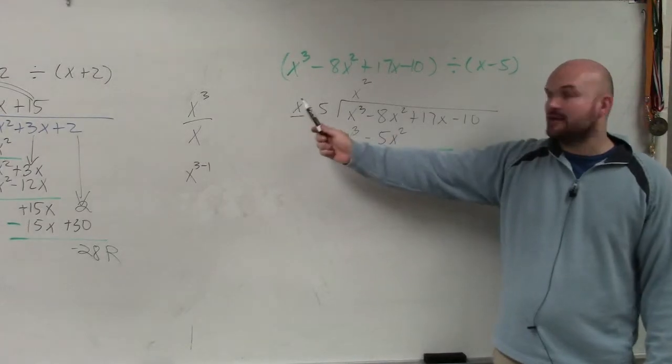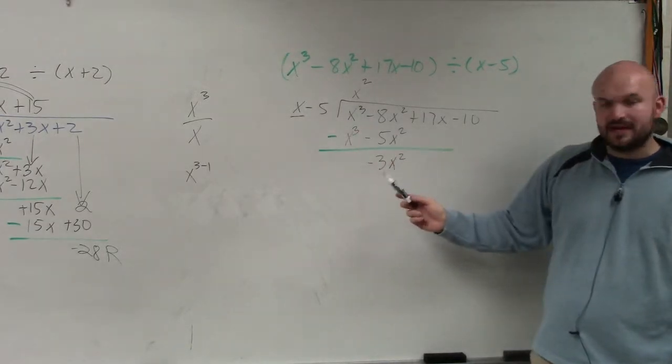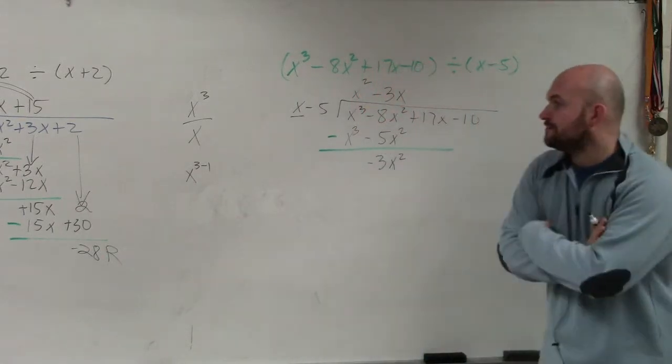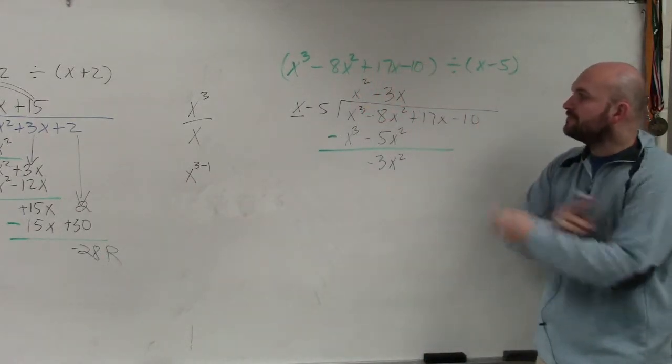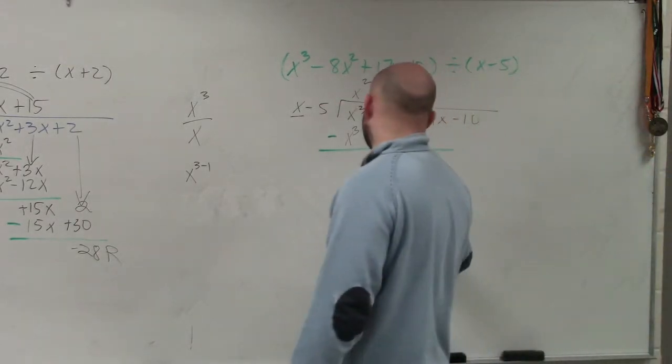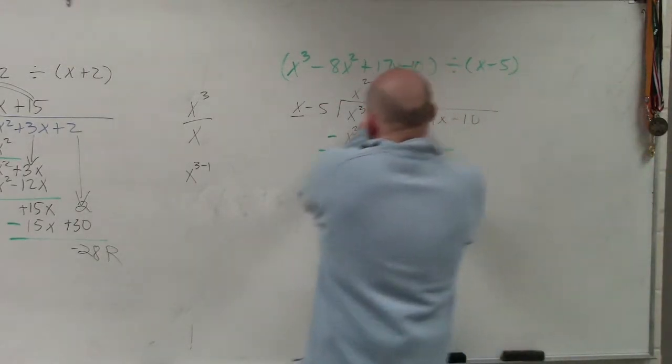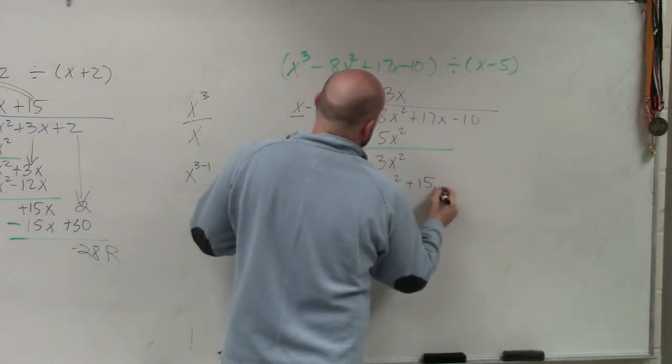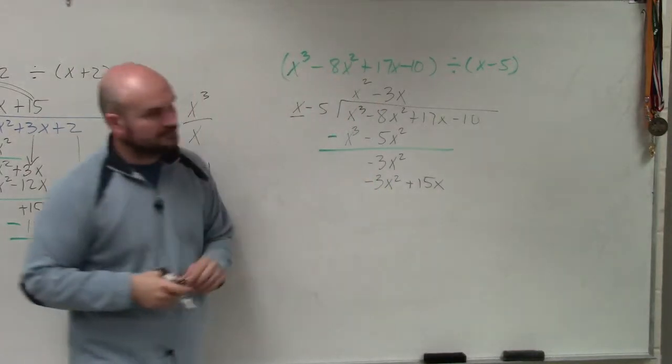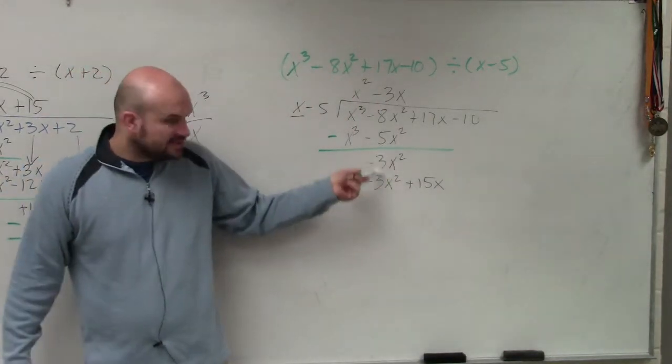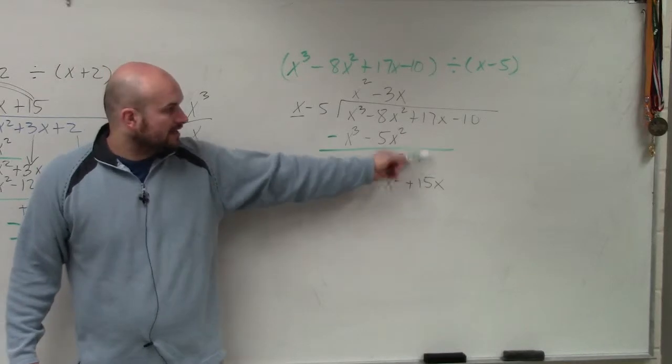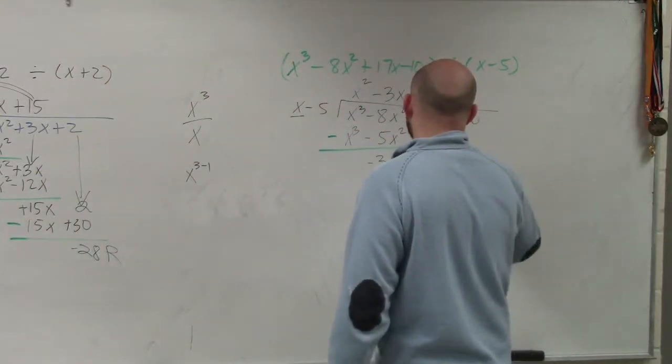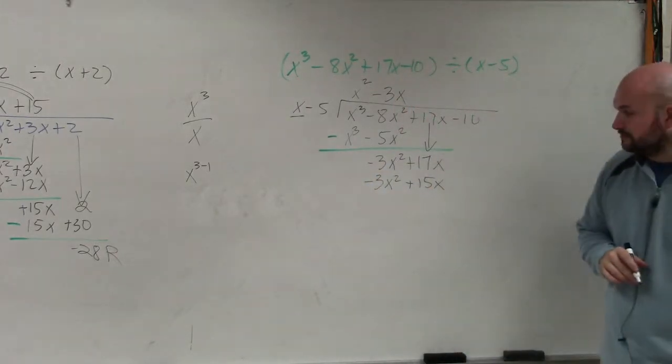Now, we do it again. x divides into negative 3x squared, negative 3x times. Now, negative 3x times x is going to give you negative 3x squared. And negative 3x times negative 5 is going to give you positive 15x. So we can subtract these two, but what am I going to subtract 15x from? Well, I go back to my problem and bring down the 17x, the positive 17x.